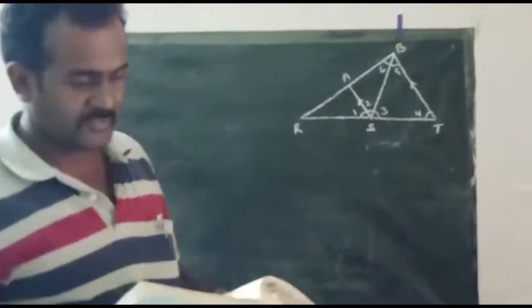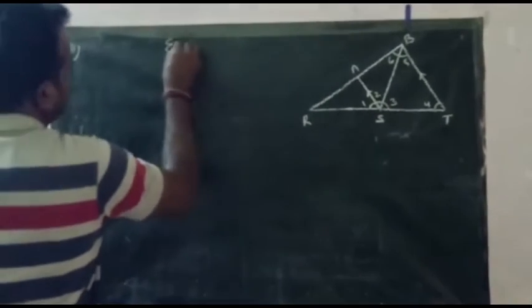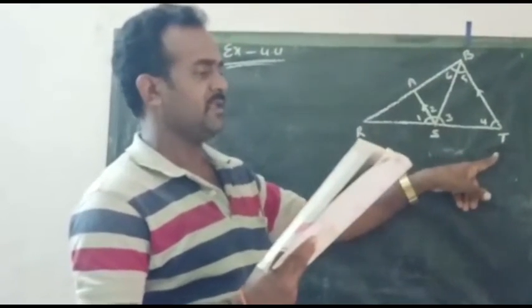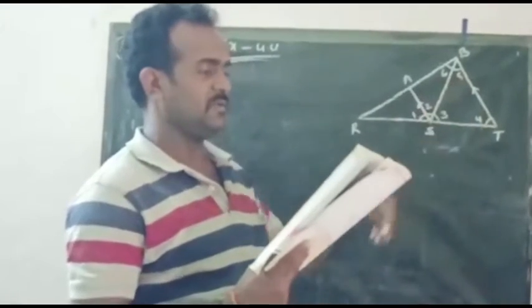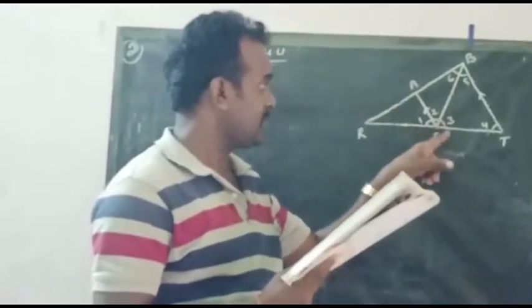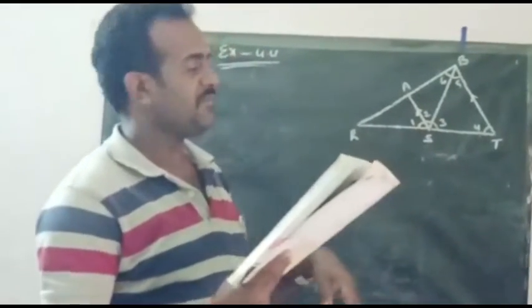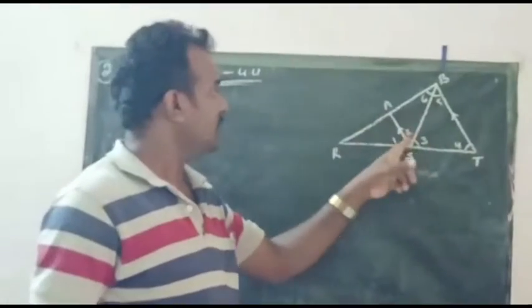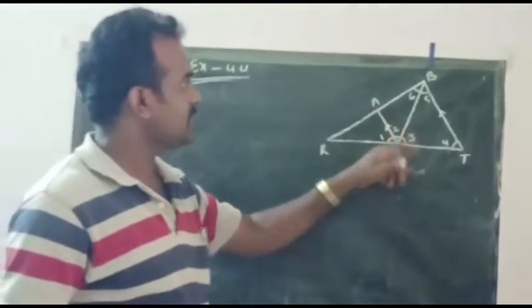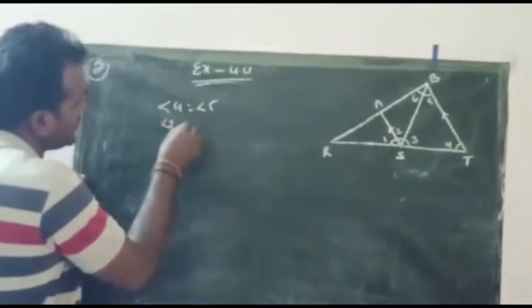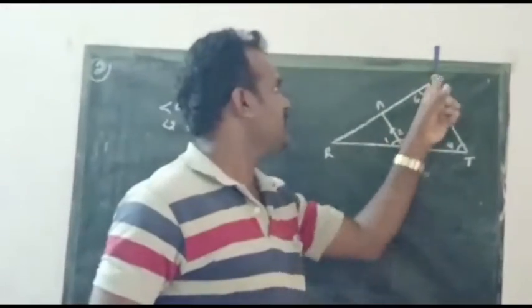Next problem: Exercise 4.4, second problem. In the given figure, AS is parallel to BT. Angle 4 is equal to angle 5. SB is the bisector of angle AST, meaning angle 2 is equal to angle 3. Find the measure of angle 1. Given: AS is parallel to BT, angle 4 equals angle 5, and angle 2 equals angle 3. Since AS is parallel to BT, SB is the transversal, so alternate interior angles are equal, giving angle 2 is equal to angle 5.